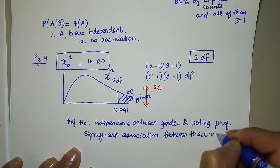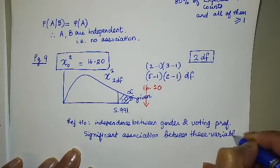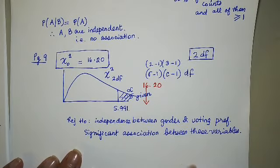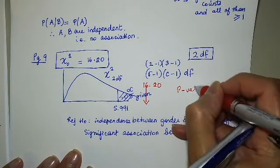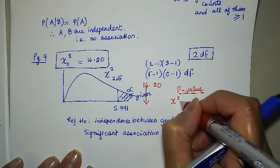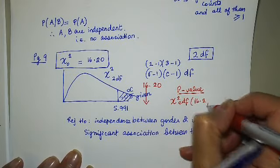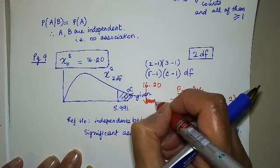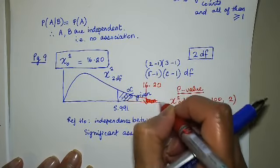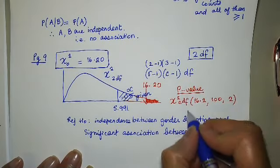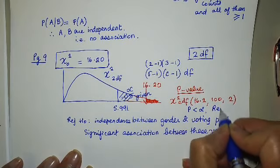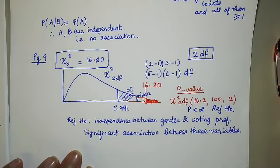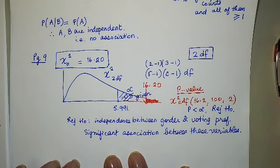So there is a significant association between these variables. That's the conclusion. If we wanted to find the p-value, this would be chi-square CDF, 16.2, comma, infinity, comma, degrees of freedom. This is the p-value. It's very small compared to alpha. P less than alpha. Reject H-naught.